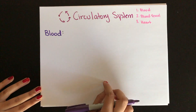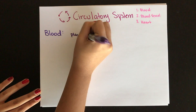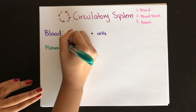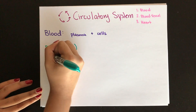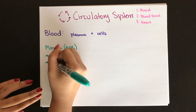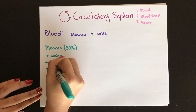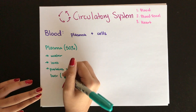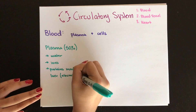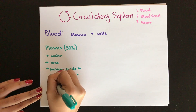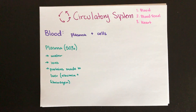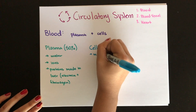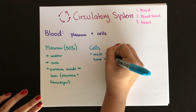The blood isn't only made up of cells — it's also made up of plasma. Plasma is mostly water, but it also carries glucose, hormones, ions, and proteins, including albumin, fibrinogen, and lipoproteins, all of which are made in the liver. The plasma composes half of the blood volume, and the other half is made up of cells. All blood cells in your body are made in the bone marrow.